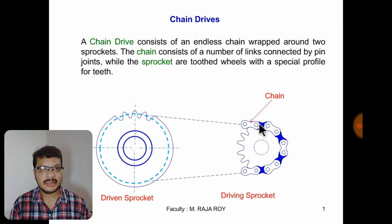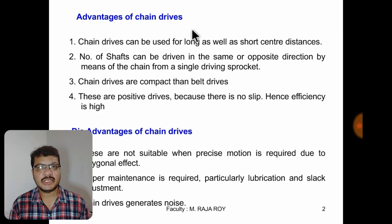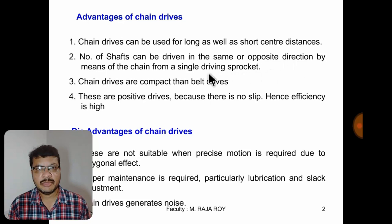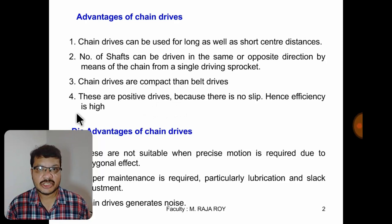Now we will see what are the advantages of chain drives. These chain drives can be used for different centre to centre distances. Another advantage is that a number of shafts can be driven in the same or opposite direction by means of the same sprocket. Chain drives are more compact than belt drives, meaning they occupy very less space. These are positive drives because there is no slip, hence efficiency is also high.